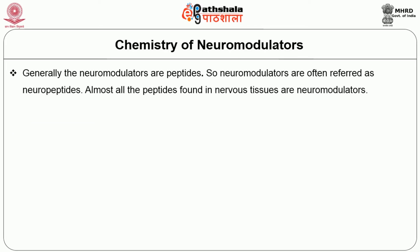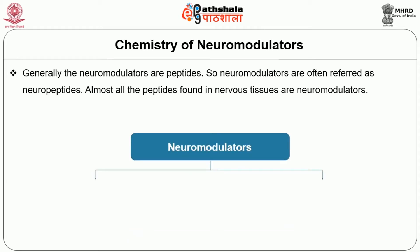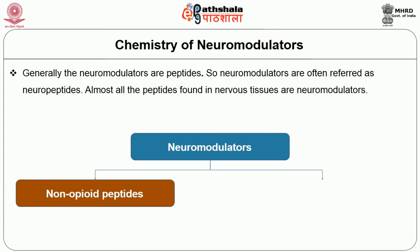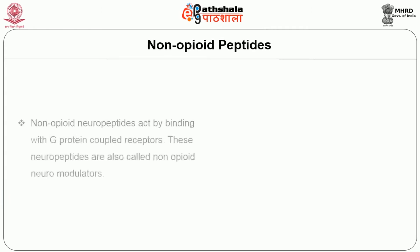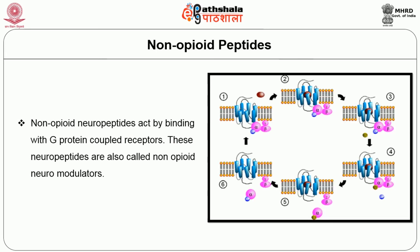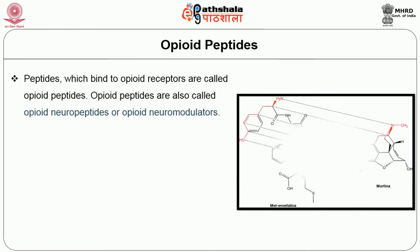Generally, neuromodulators are peptides, so they are often referred to as neuropeptides. Almost all peptides found in nervous tissues are neuromodulators. They are classified into two types: non-opioid peptides and opioid peptides. Non-opioid peptides act by binding with G-protein coupled receptors and are also called non-opioid neuromodulators. Opioid peptides bind to opioid receptors and are called opioid neuropeptides or opioid neuromodulators. Opioid receptors are membrane proteins located in nerve endings in the brain and GI tract, and are of three types: mu, kappa, and delta.